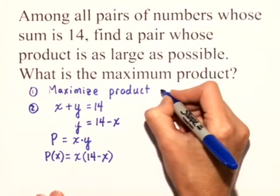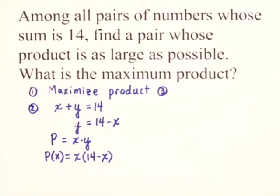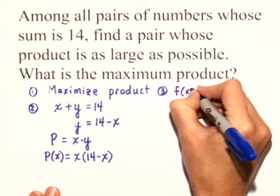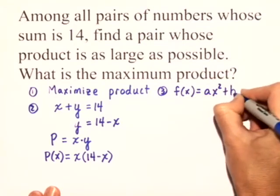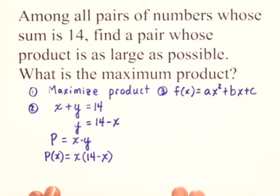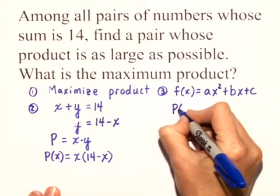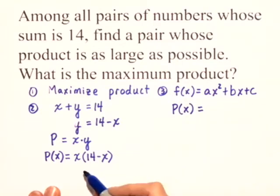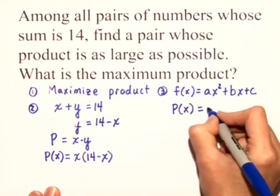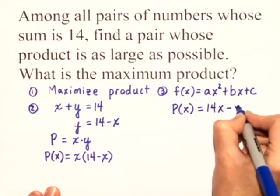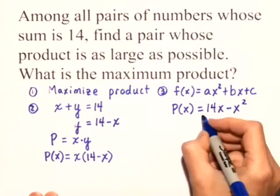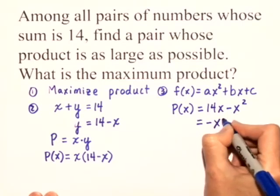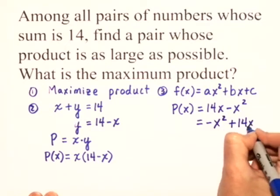Now we're ready to go on to step 3. We want to write this quadratic function in this form: f of x is equal to ax squared plus bx plus c. So in this case, our function is actually p of x. And that's equal to, let's distribute the x through, and we'll have 14x minus x squared. And in order to write it in standard form, we'll write it in descending order. So it's negative x squared plus 14x.